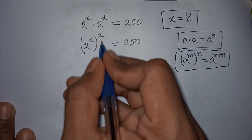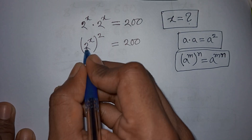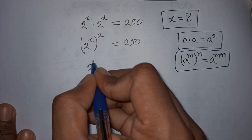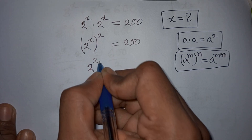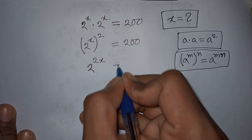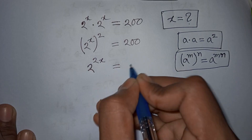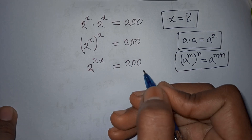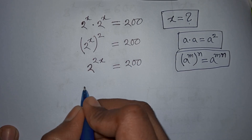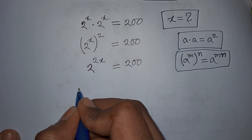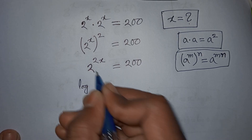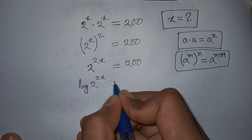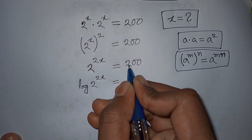So 2^x bracket power 2 is the same as 2^(x times 2), that means it will be 2^(2x) is equal to 200. In the next step we apply log on both sides, so log of 2^(2x) is equal to log of 200.